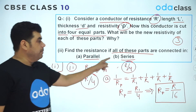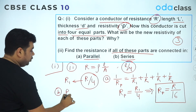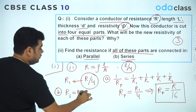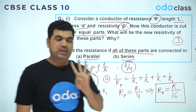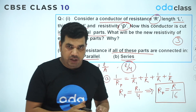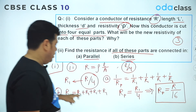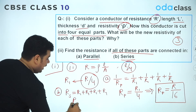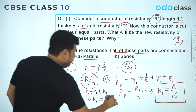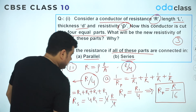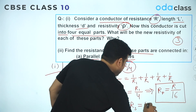For part (b), if all four parts are connected in series: R_series = R1 + R1 + R1 + R1 = 4R1. Since each part has resistance R1 = R/4, we get R_series = 4 × (R/4) = R. So the series combination gives the same resistance R as the original conductor.